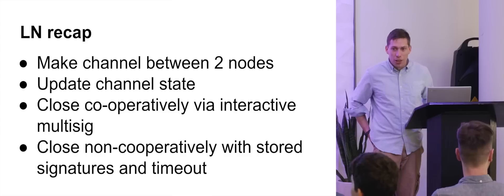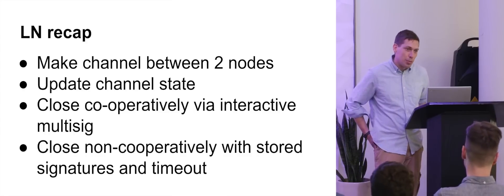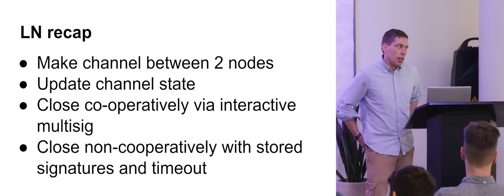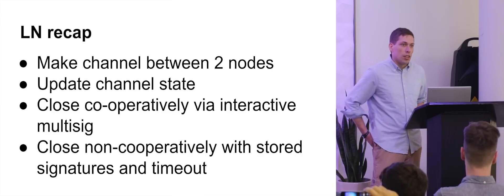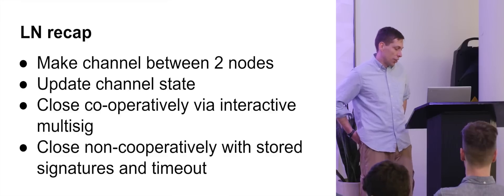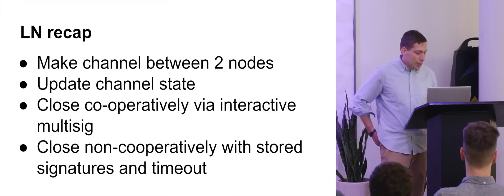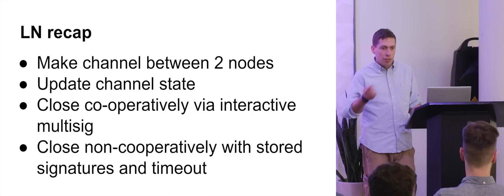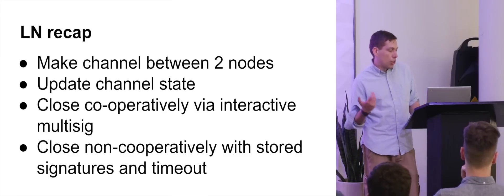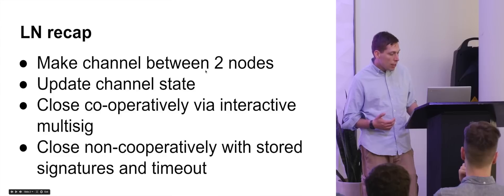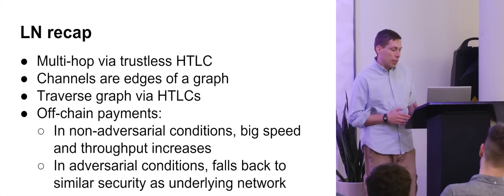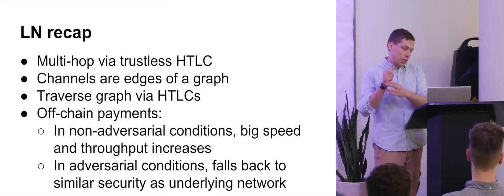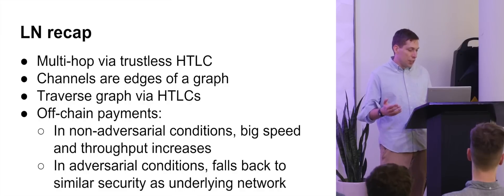I'm going to recap Lightning Network real quick. The basic idea is you make channels between two nodes. A channel from the perspective of the rest of the world is just a two-of-two multi-sig output — you can't even tell it's two-of-two multi-sig, you just see an address with a three in front, or in the case of SegWit, a 32-byte long address. You keep updating the channel state with your counterparty and you can have these multi-hop things going around with HTLCs — hash time lock contracts. You can think of it as a graph where channels are edges and nodes are vertices, traversed via HTLCs.